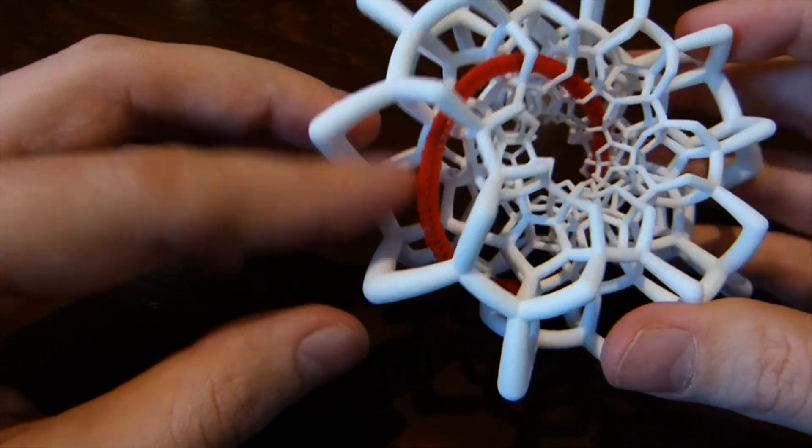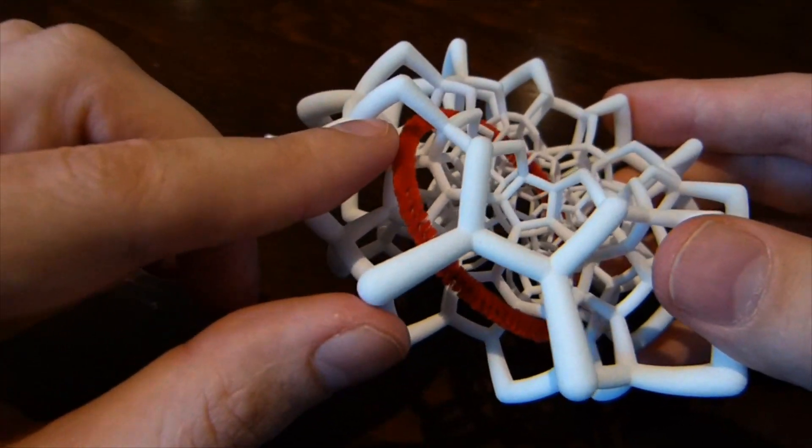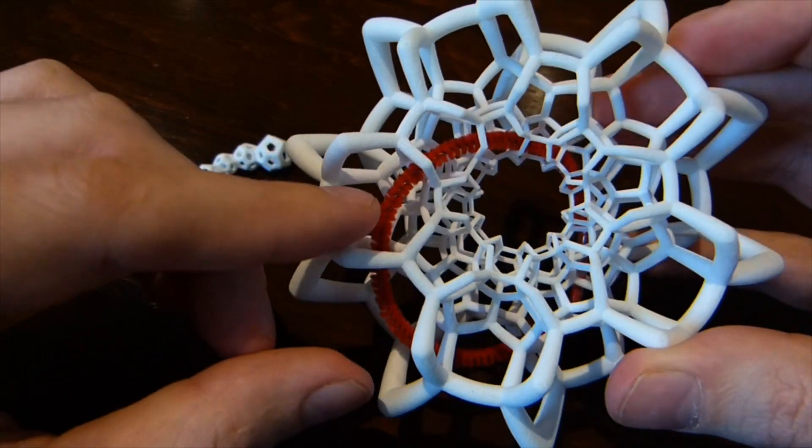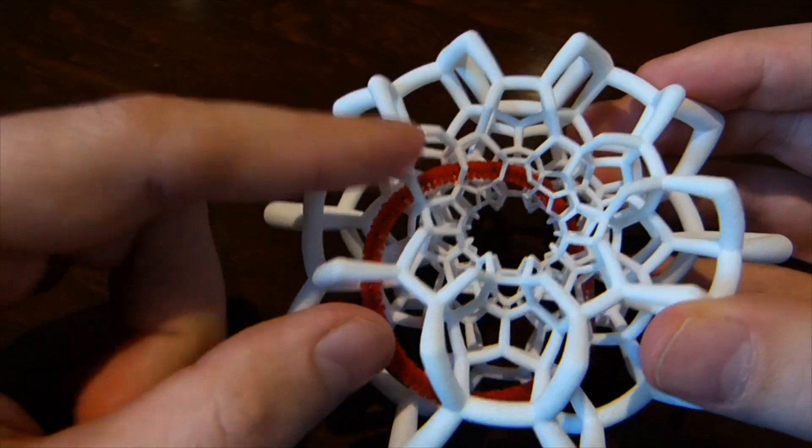So if you start in a dodecahedra cell of this thing and choose the direction to go, choose a face to go out of, then if you go through this face you're in another dodecahedra cell. And you can go straight through that, out the opposite face, and carry on.